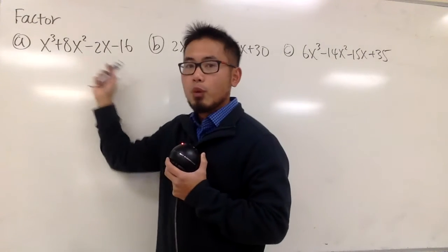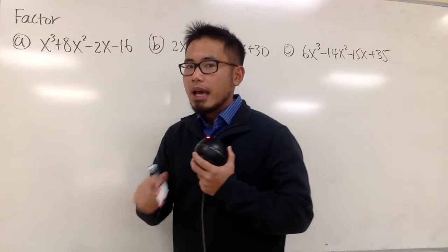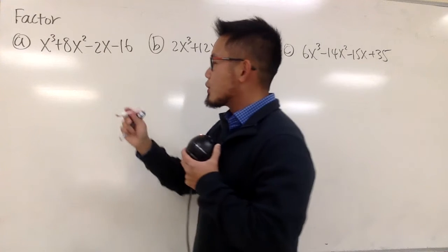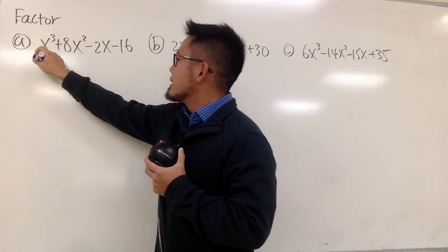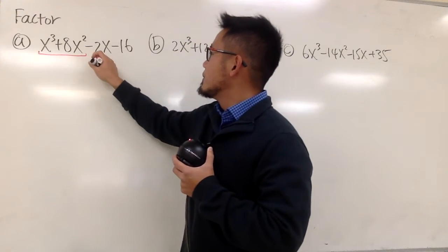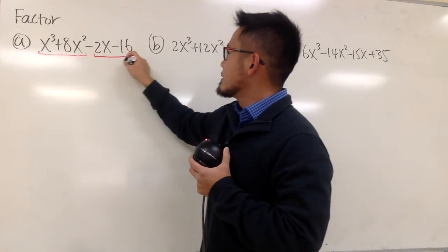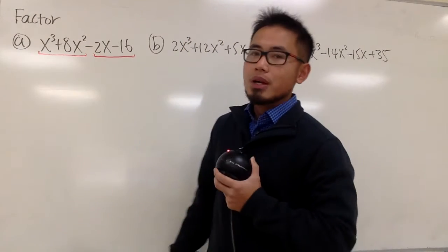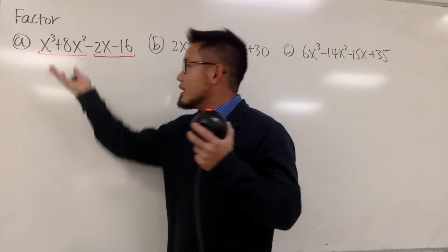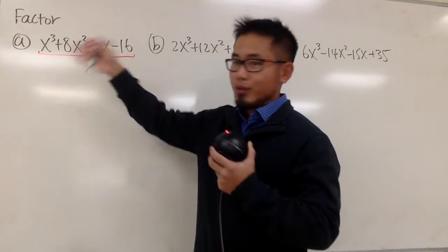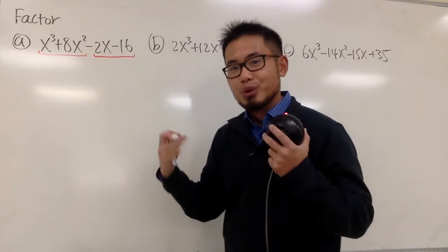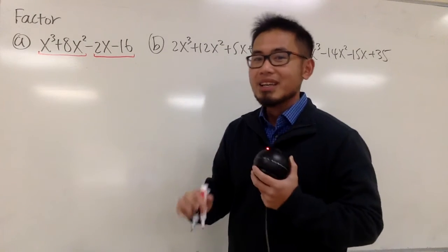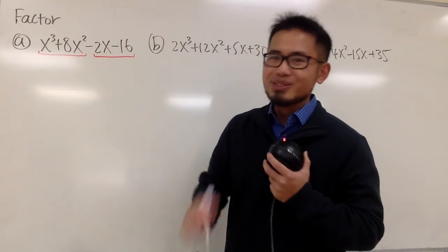You see that we have four terms. Let's go ahead and factor the first two and then factor the second two, because there's nothing in common for all four terms, so we do it by grouping — the two and twos.